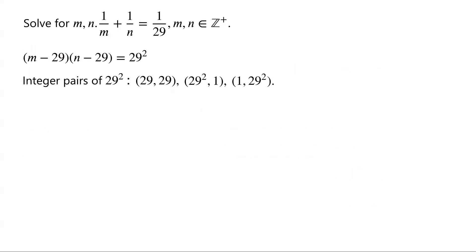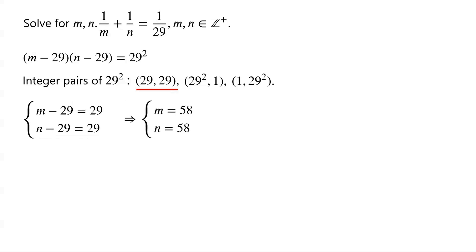For each integer pair, we have a system of equations. For integer pair (29, 29), we have m minus 29 equals 29, and n minus 29 equals 29. So m equals 58 and n equals 58. We can verify this: when m equals 58 and n equals 58, the left-hand side equals 1/58 plus 1/58, which equals 2/58, which is 1/29, equal to the right-hand side. So it is a solution of the original equation.